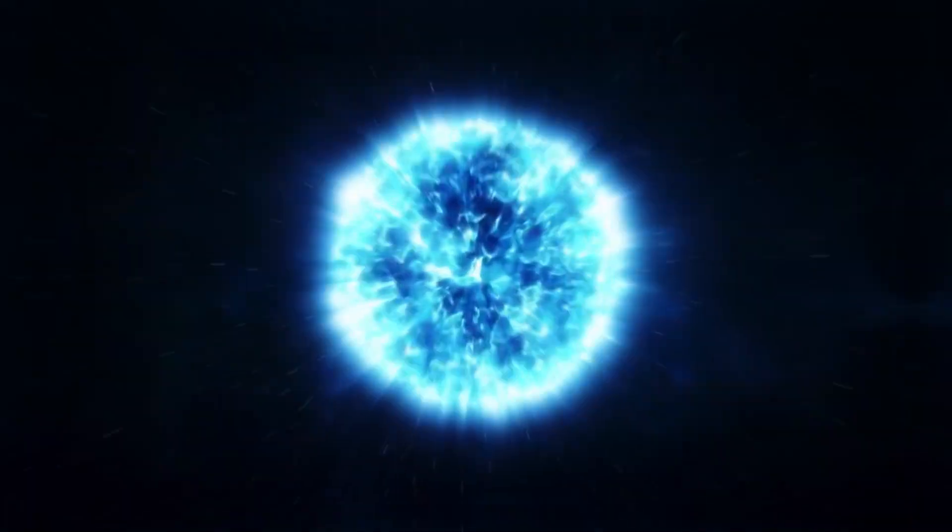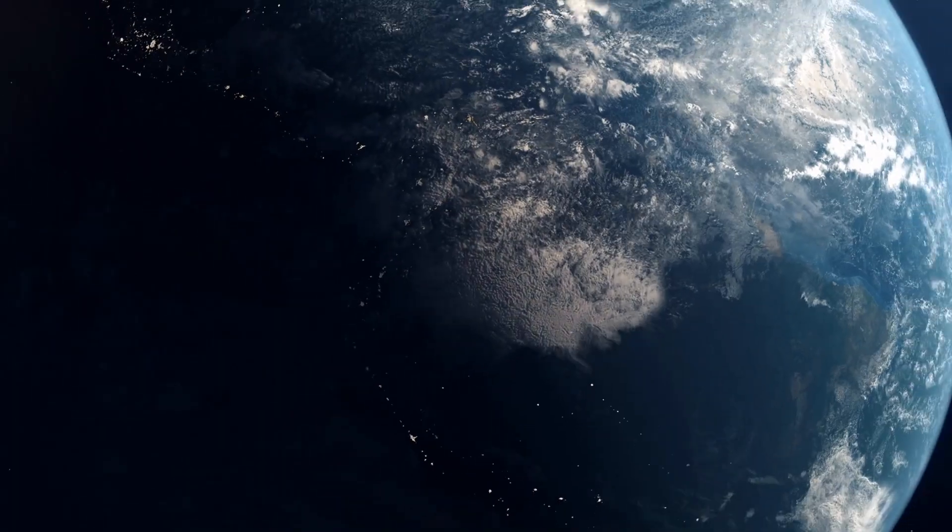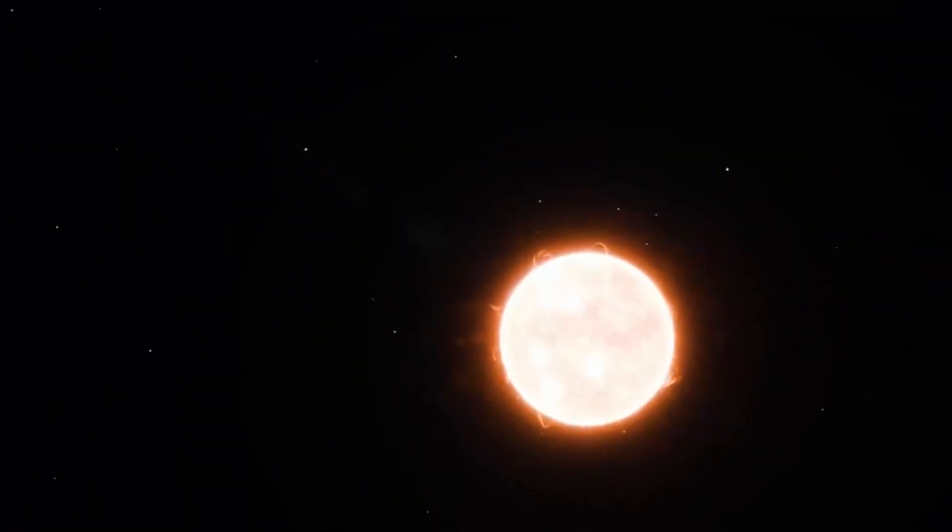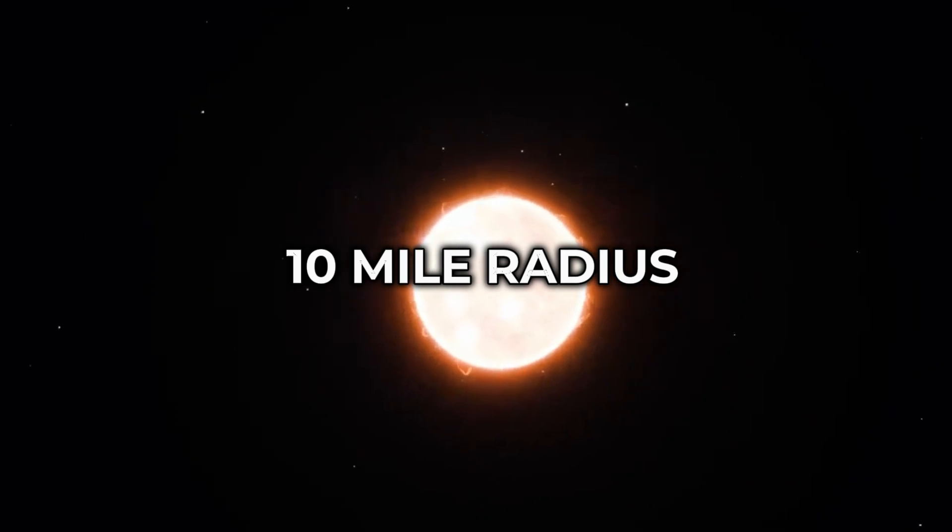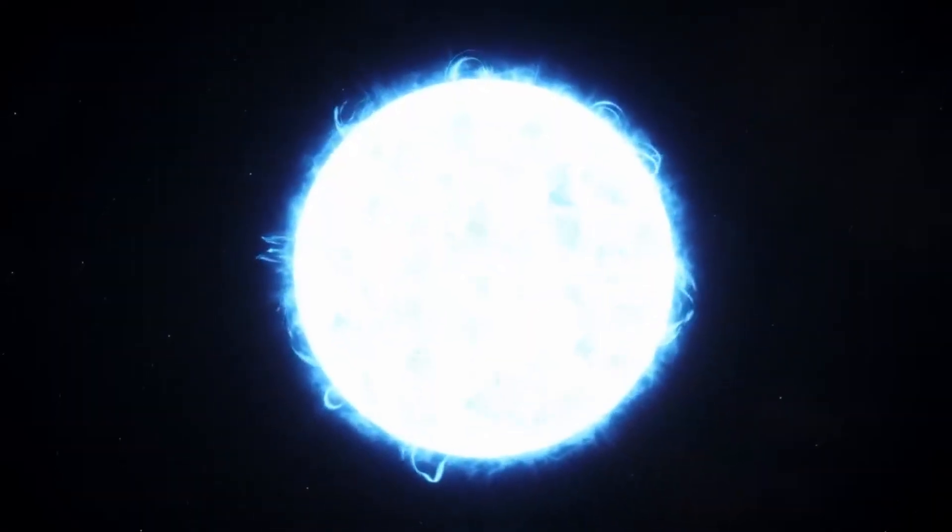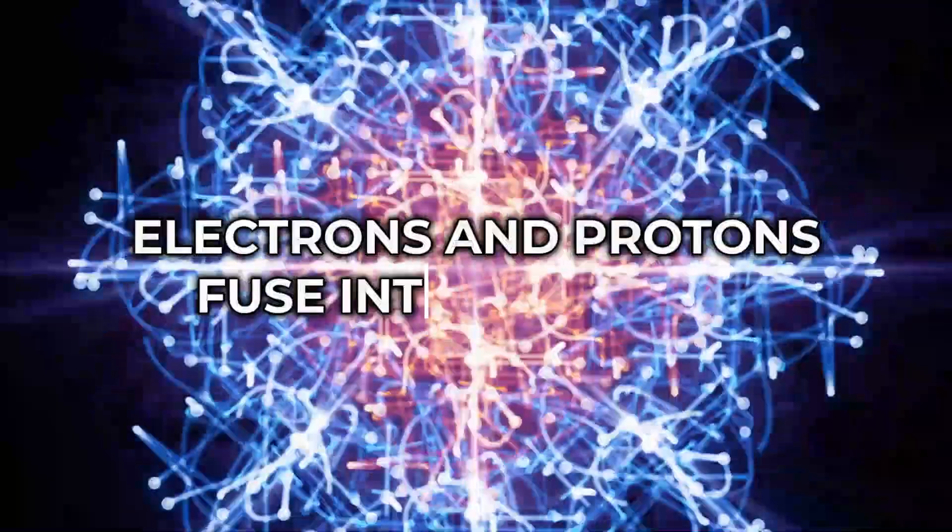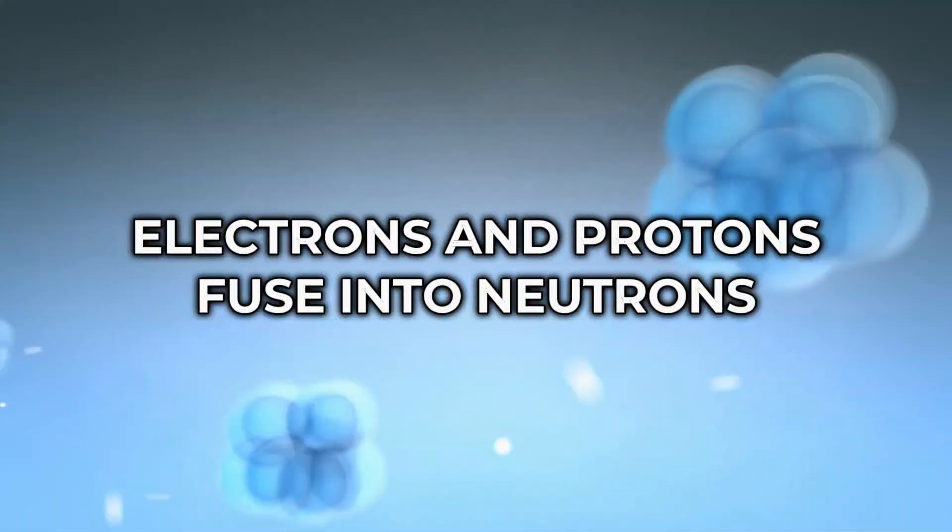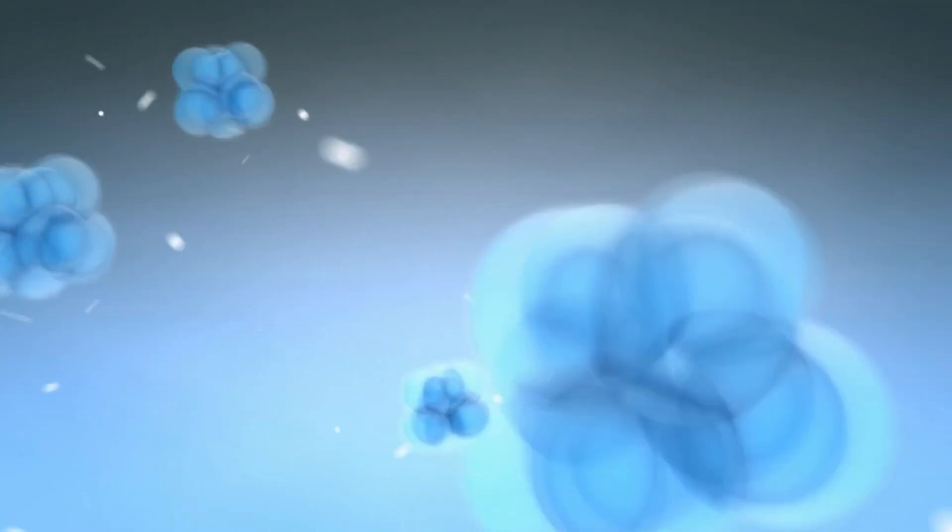In the blink of an eye, the expansive core, once as wide as the Earth, shrinks down to a tiny 10-mile radius. This cataclysmic collapse triggers a chain reaction as electrons and protons fuse into neutrons and neutrinos under extreme conditions.